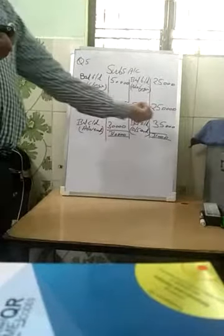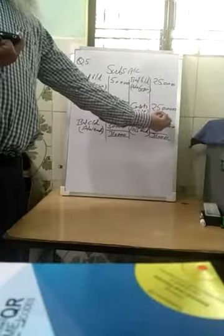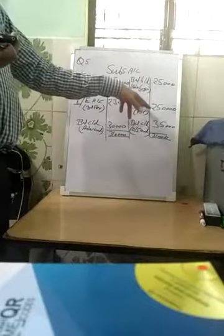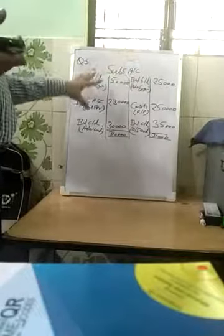If cash received is given in the question, you can find the income expenditure figure as the balancing figure. If income expenditure is not given, then you can get the cash as the balancing figure — the same applies for other items. This is the accounting method for subscription.